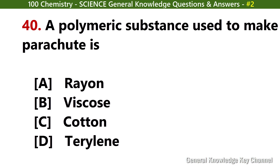A polymeric substance used to make parachutes is? Answer B: Viscose.